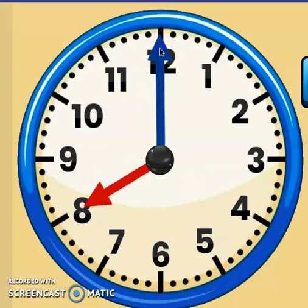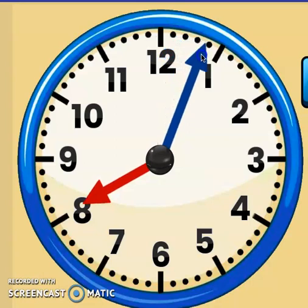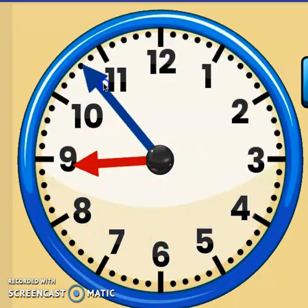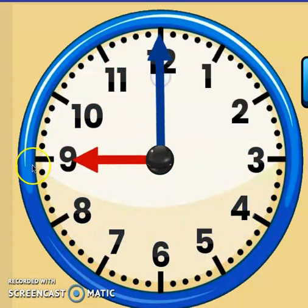You noticed that the hour hand and the minute hand move around the clock. What are these little parts of the clock that show minutes and hours?